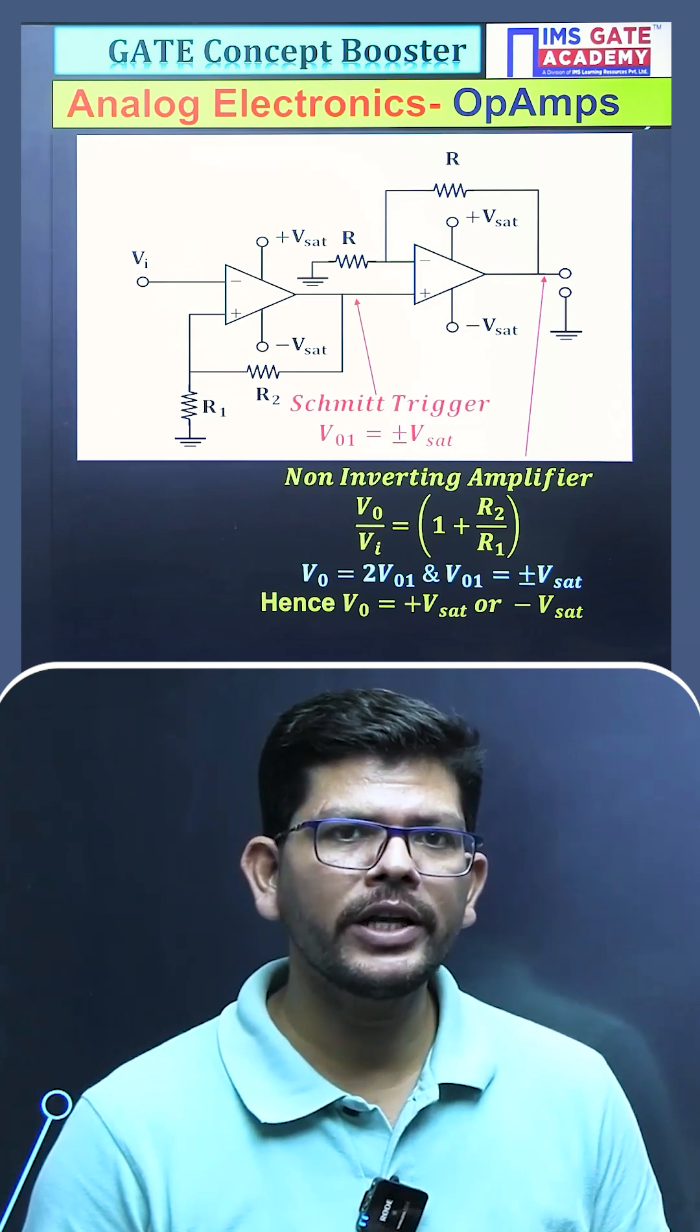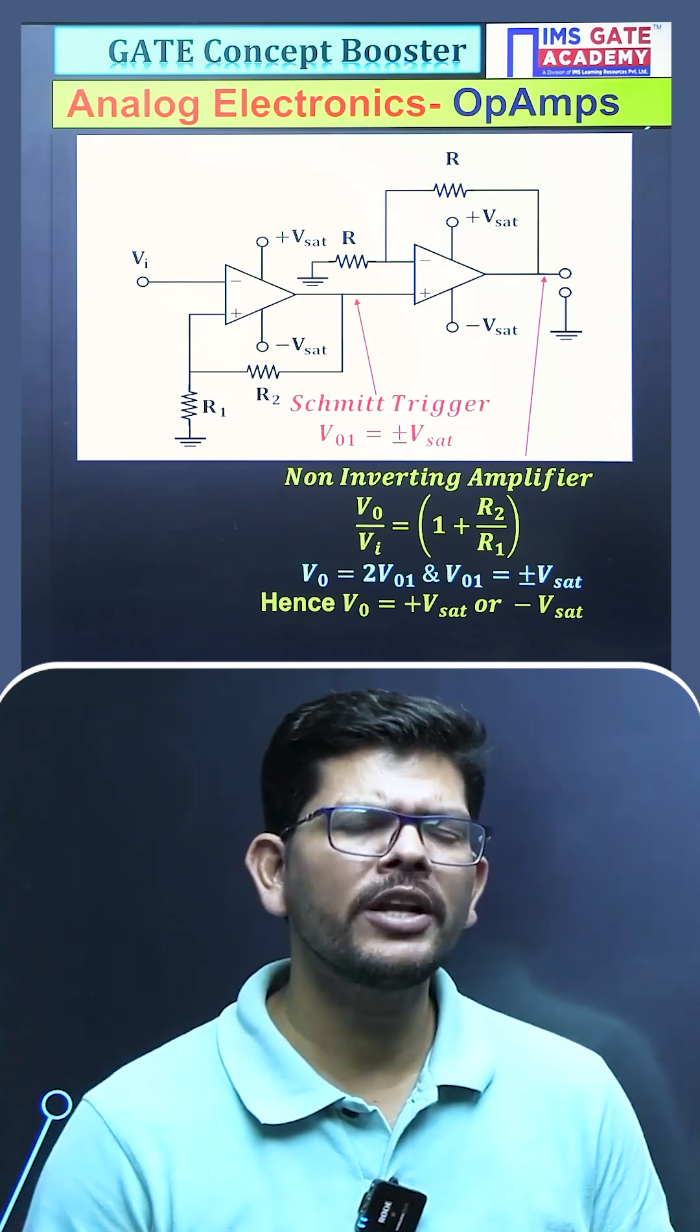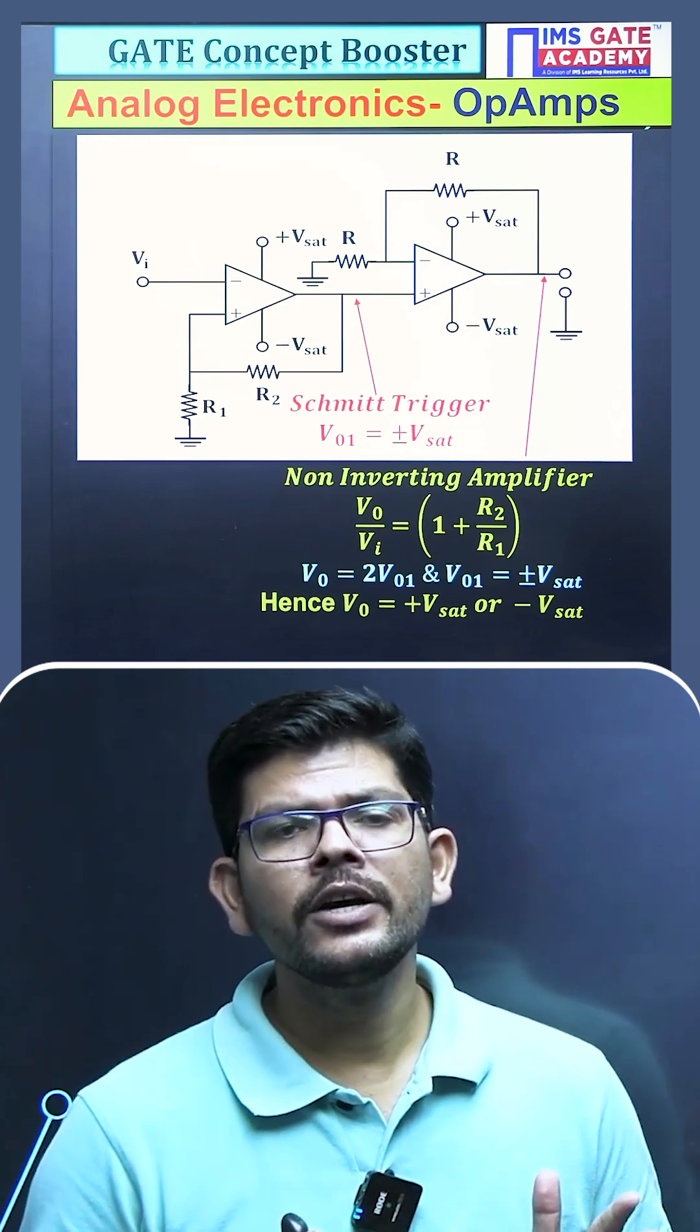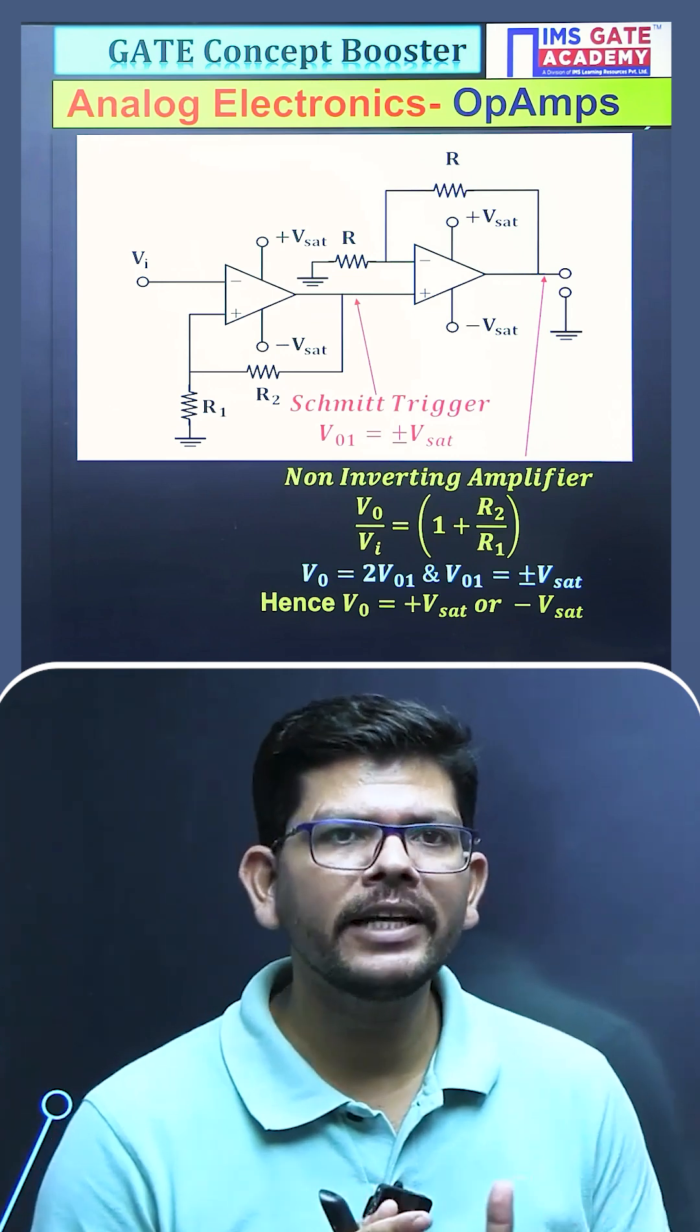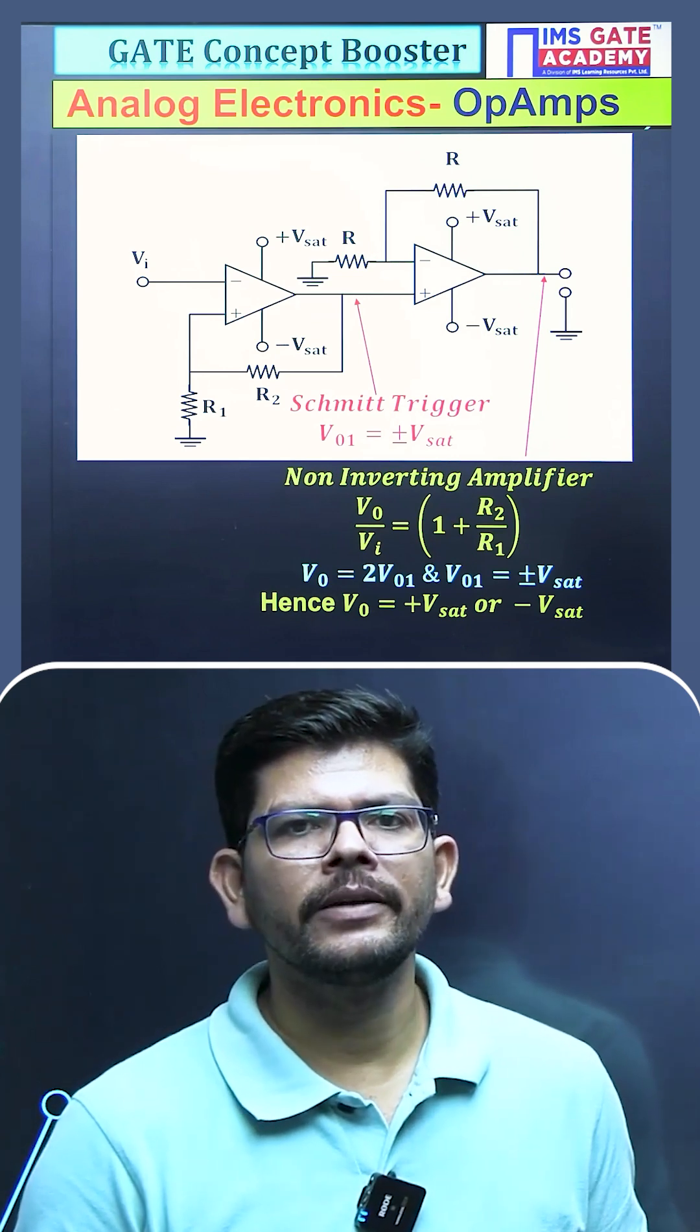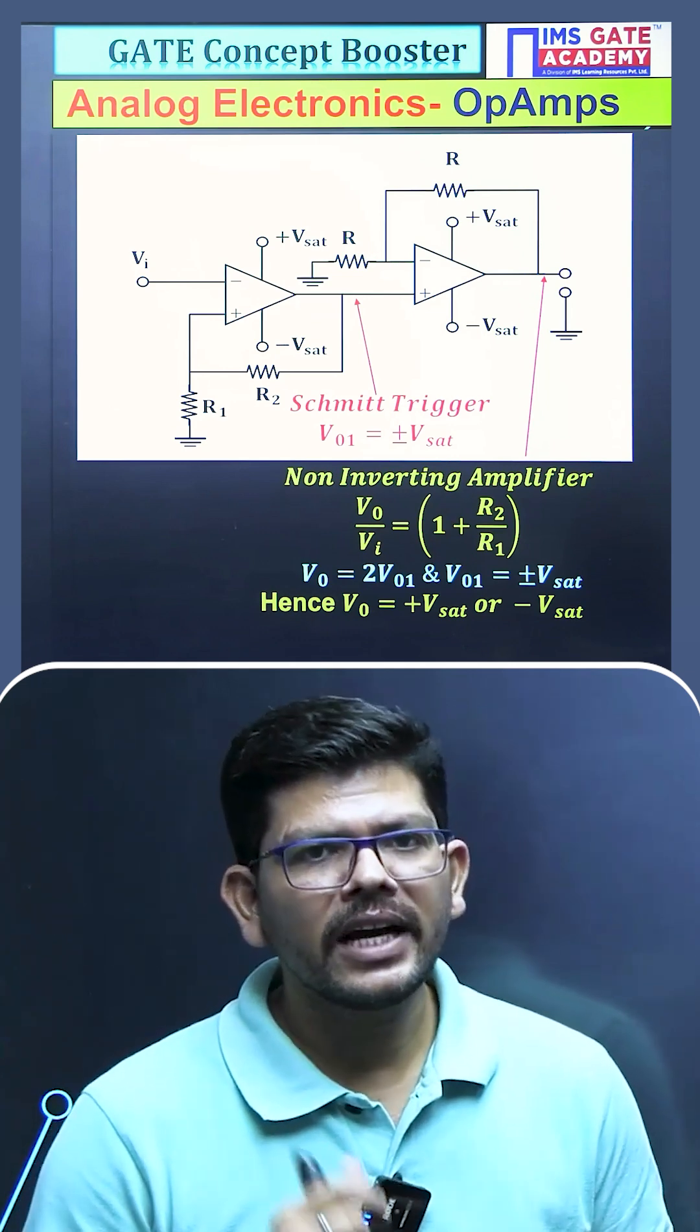This is how you should have the knowledge of Schmitt trigger, inverting, non-inverting operational amplifier. These are some set configurations. Now what they have done here is they have just combined those two configurations and you could have solved this question easily. Be prepared, it will be asked again in the exam.